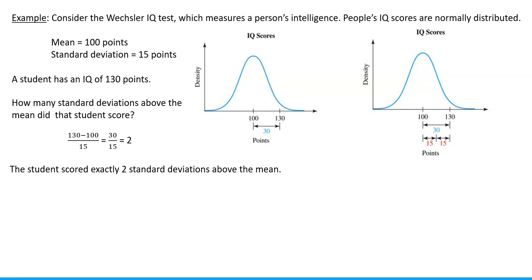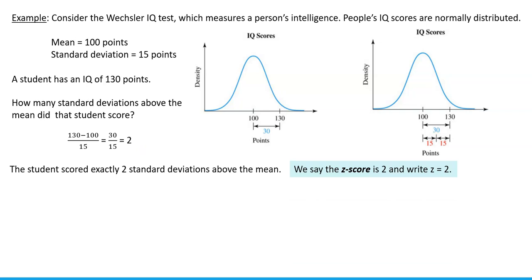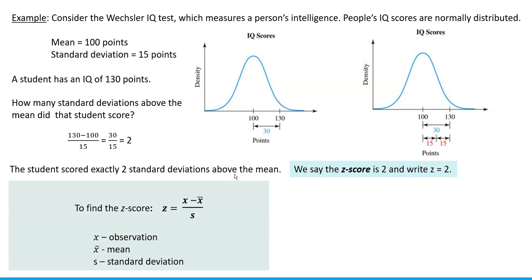That shows algebraically that the student scored exactly two standard deviations above the mean. This can be rephrased: we say the z-score is 2, and write z = 2. The z-score is the number of standard deviations above or below the mean. Every data value has a corresponding z-score, which indicates how far that specific data value is above or below the mean in terms of standard deviations.